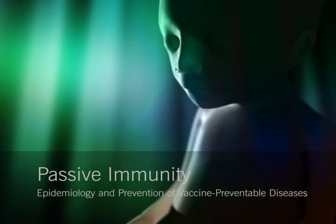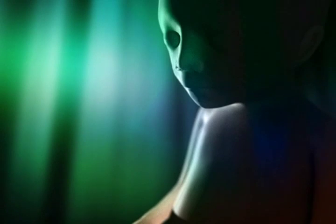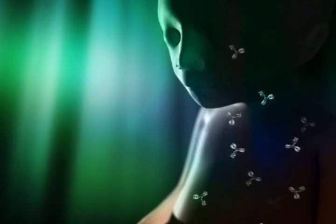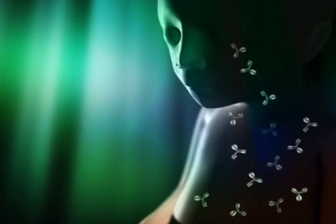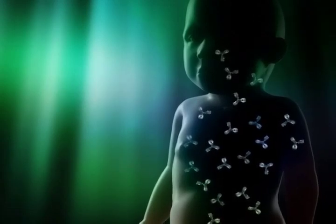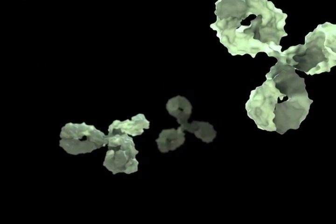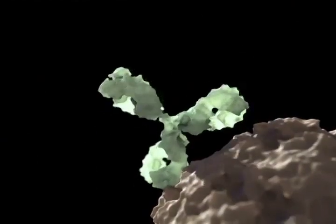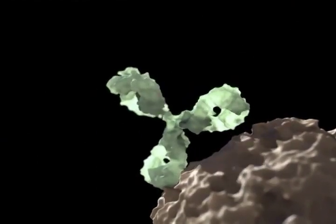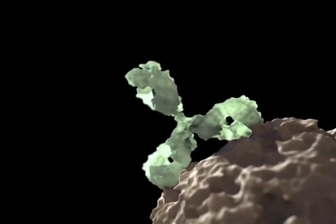With passive immunity, a person receives antibodies from another person rather than producing them. The most common type of passive immunity occurs when a fetus receives its mother's antibodies across the placenta. A full-term infant is born with antibodies against the same diseases to which the mother is immune. As the infant grows, the maternally acquired antibodies circulate throughout the body. Since the infant did not actively produce the antibodies, the level declines with time. If the infant is exposed to a disease for which it has maternally acquired antibodies, the antibodies will recognize and help to eliminate the invading organism, just as it would if the infant were immune from infection.